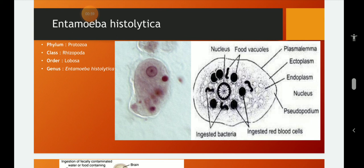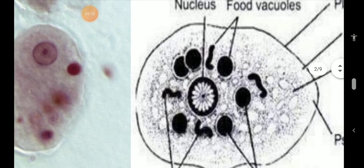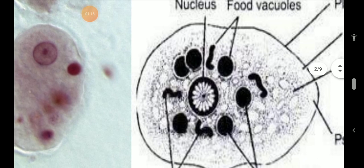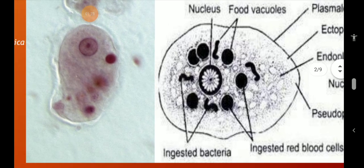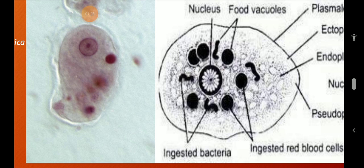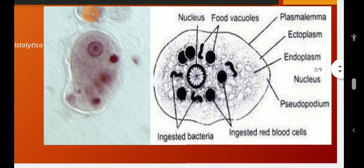And the cytoplasm is divided into outer clear ectoplasm and inner granular endoplasm. Endoplasm here contains a distinct vesicular nucleus as you can see here. It contains a vesicular nucleus and many food vacuoles having RBCs. These RBCs are ingested by the Entamoeba and it has a single blunt Pseudopodium for locomotion.